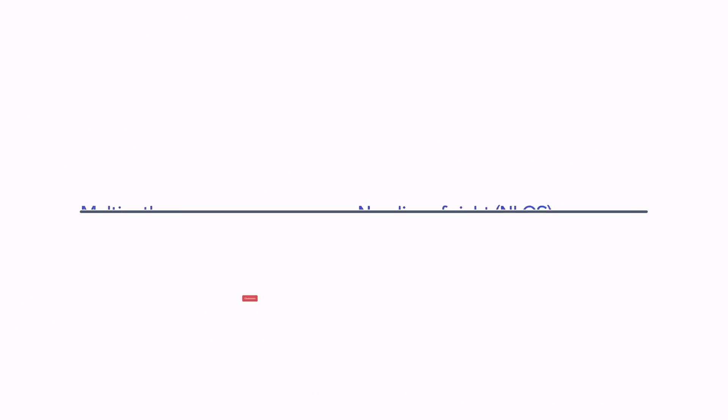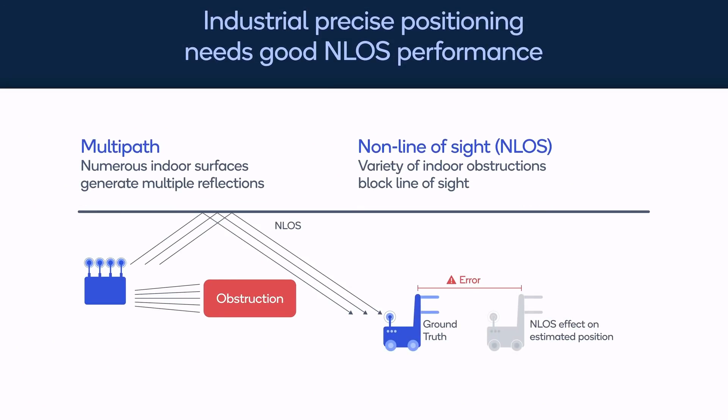The other area is that for indoor you have lots of objects and lots of reflectors. In that case you can have more instances of non-line-of-sight scenarios. If you are actually using a non-line-of-sight path for your positioning, then you always end up in the wrong location. So basically one is that your environment could be much harsher, and on the other hand your requirement is much more stringent. Those are the two distinct flavors for indoor versus outdoor positioning.